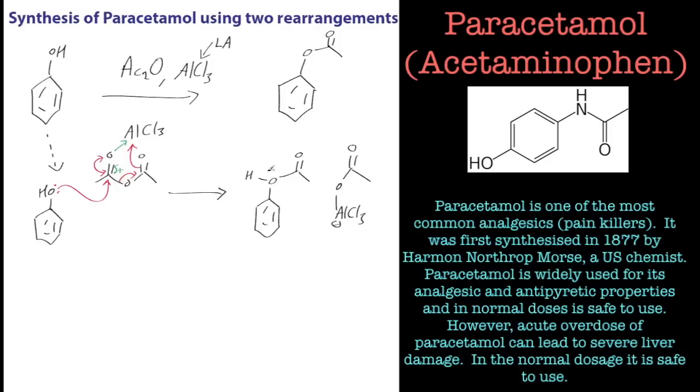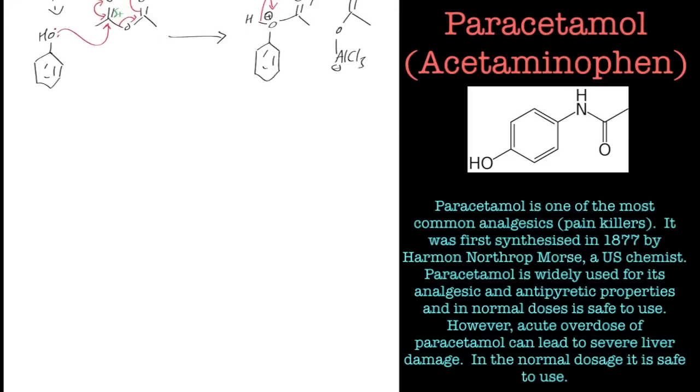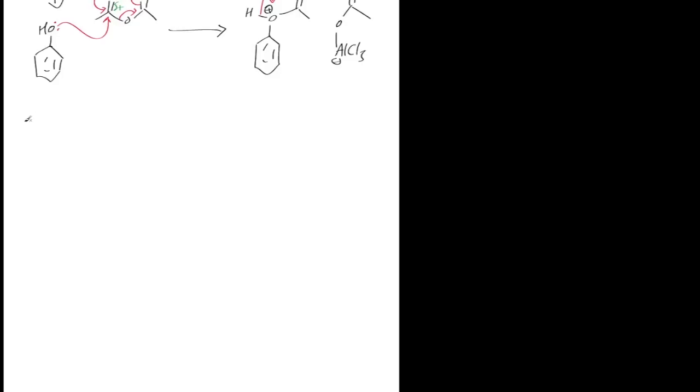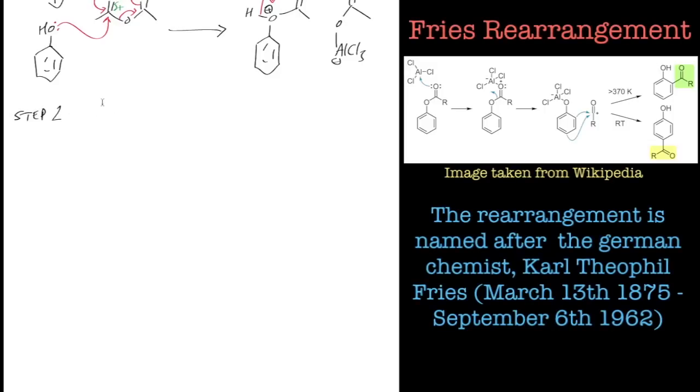We just need to sort out the charge - all the charges are balanced, just need to sort them out. Lose a proton to the solution - we're in acidic conditions anyway, so that's perfectly acceptable. That gives us the acetyl group, so the next stage is the Fries rearrangement.